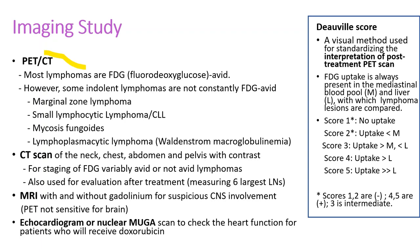PET-CT is the best imaging study for staging and assessing tumor response after treatment. Most lymphomas are fluorodeoxyglucose-avid, but some indolent lymphomas are not — like marginal zone lymphoma, small lymphocytic lymphoma, mycosis fungoides, or Waldenström macroglobulinemia — so those patients need a CT scan. MRI is used to check brain or CNS involvement. ECHO and MUGA scan are used to check heart function before the cardiotoxic drug doxorubicin.